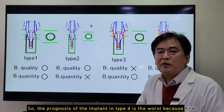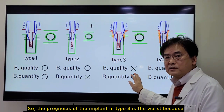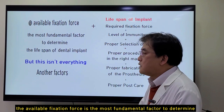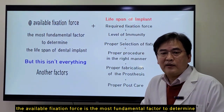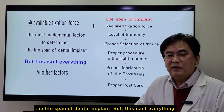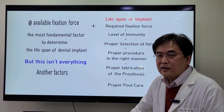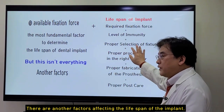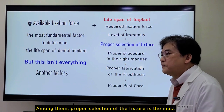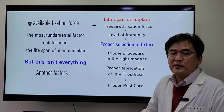So the prognosis of implant in type 4 is the worst because the available fixation force is the most fundamental factor determining the lifespan of dental implant. But this is not everything — there are other factors affecting the lifespan of implant. Among them, proper selection of fixture is the most important matter.